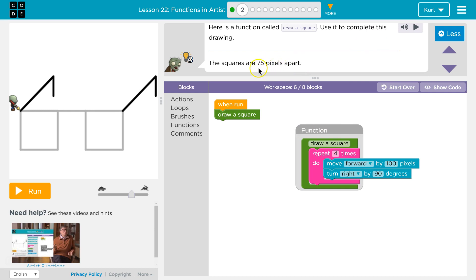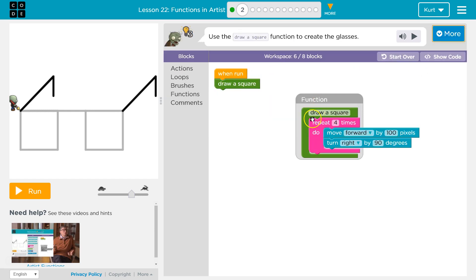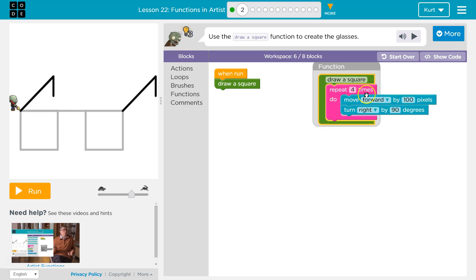Okay, the squares are 75 pixels apart. All right, let's see, draw a square, repeat four times.